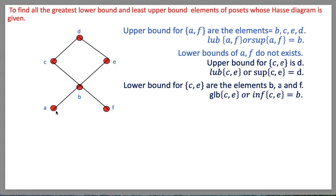In this diagram, the upper bounds of the set {a, f} are b, c, d, and e, and the least among these upper bounds is b. This means the least upper bound of {a, f} is b.